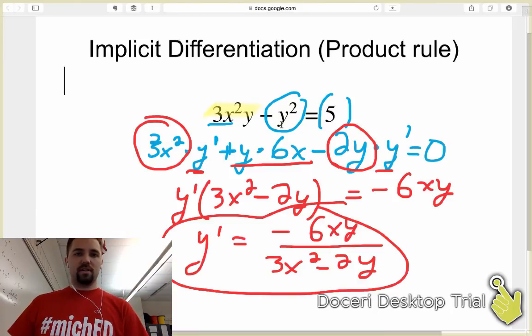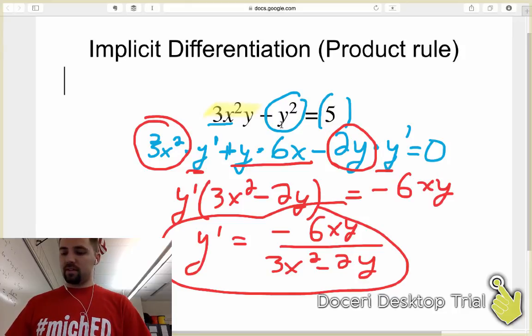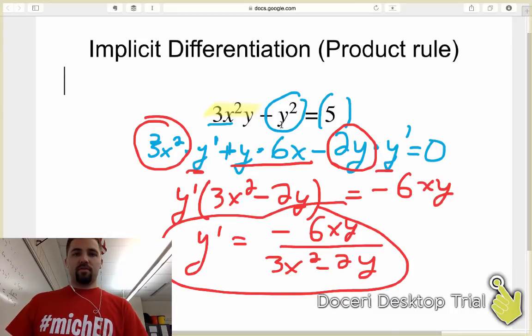And sometimes this happens with the quotient rule, too. So make sure that you're paying attention to both of those rules, and then also this one's nice because it includes the chain rule over here, too. That's a chain rule problem with the y². So be careful with implicit differentiation that you're applying all the derivative rules.